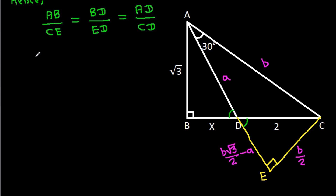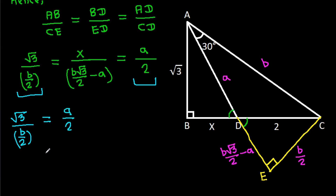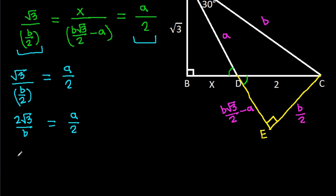So applying the similarity ratio: AB over CE equals BD over ED. That is root 3 over (B/2) equals x over (B√3/2 minus A). From the ratio AB over CE equals AD over CD, we get root 3 over (B/2) equals A over 2, which gives us 2 root 3 over B equals A over 2. Cross-multiplying, AB equals 4 root 3.